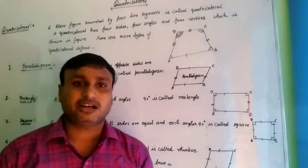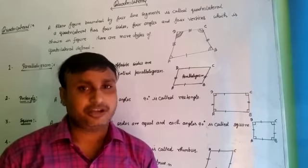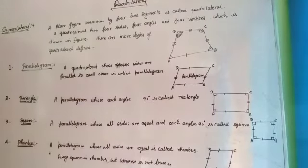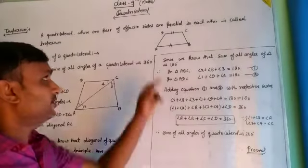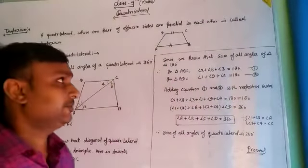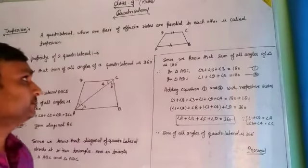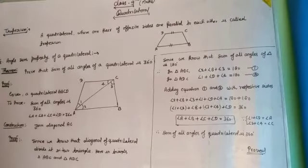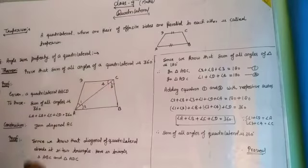That is, every square satisfies all the properties of rhombus, but every rhombus does not satisfy all the properties of square. Next is trapezium. A quadrilateral whose one pair of opposite sides are parallel to each other is called a trapezium. Now, the angle sum property of quadrilateral — prove that the sum of all angles of a quadrilateral is 360 degrees.